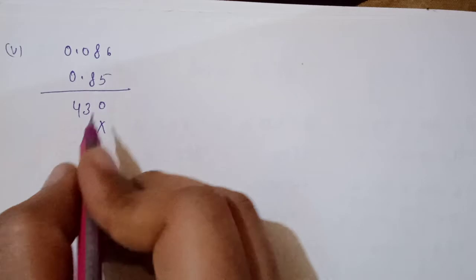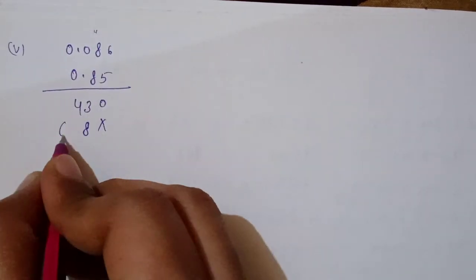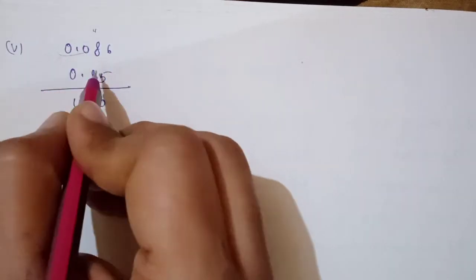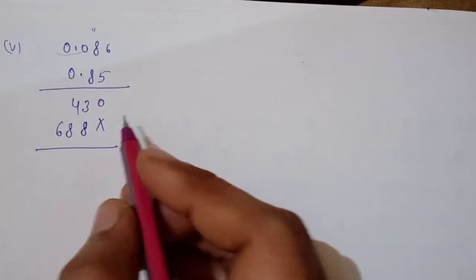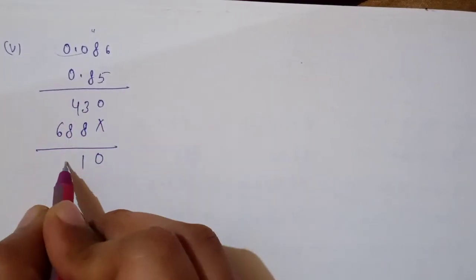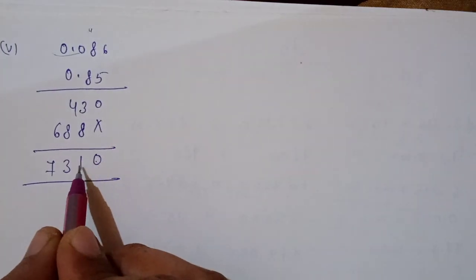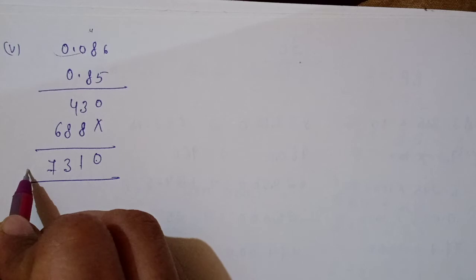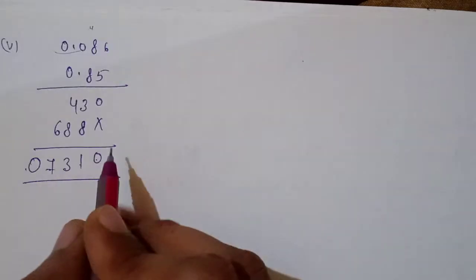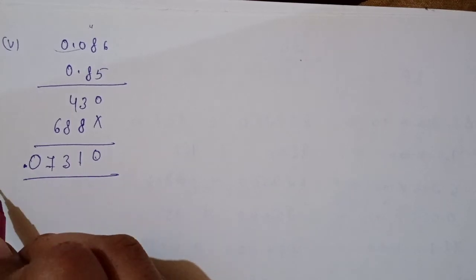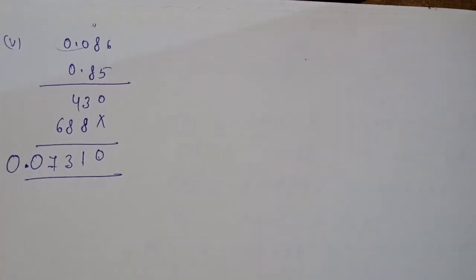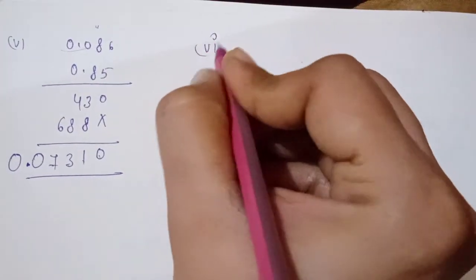Now the fifth part: 0.086 × 0.85. Multiply: 5×6=30, 5×8=40; 8×6=48, 8×8=64, carry 68. Remaining digits are zero — no impact. Add the numbers. Count decimal places: one, two, three, four, five total. Count from the right — one, two, three, four — the fifth digit is missing, so put a leading zero. Before the decimal always needs a digit, so add another zero: 0.00731.